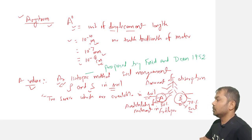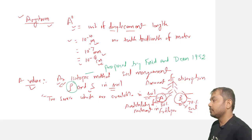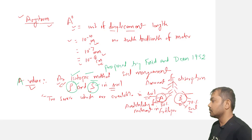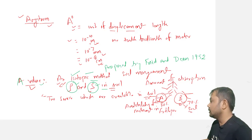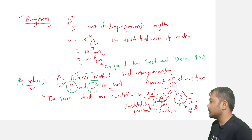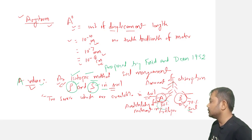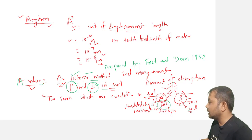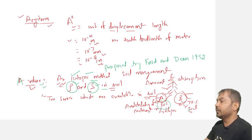We can determine the amount of available nutrient in soil in terms of a standard fertilizer, and that term is known as the A value. This was proposed in 1952. Always remember, the A value concept is especially used for the assessment of phosphorus and sulfur in the soil. It is an isotopic method to determine phosphorus and sulfur in soil, expressed in terms of a standard fertilizer.